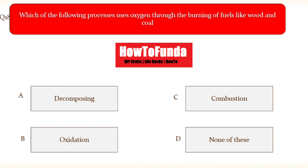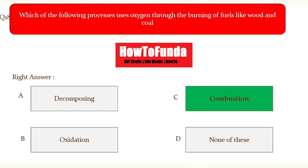Question number eighteen: which of the following processes uses oxygen through the burning of fuel like wood and coal? The options are decomposing, oxidation, combustion, and none of these. The correct answer is combustion.